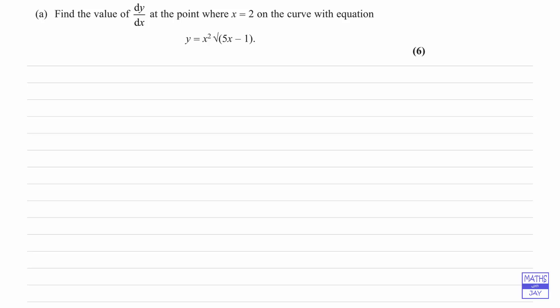So we've got the product of x squared and the square root of 5x minus 1. Let's just remind ourselves of the product rule for differentiation. We use this when y is a product of two functions of x. So u is a function of x and v is a function of x. And then dy by dx is u times dv by dx plus v times du by dx.